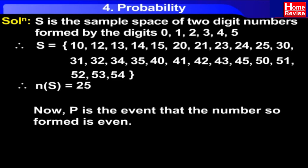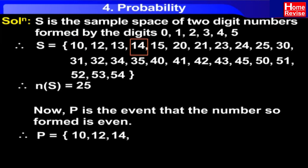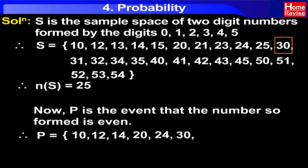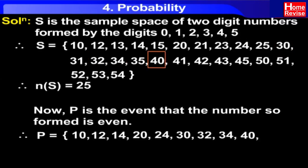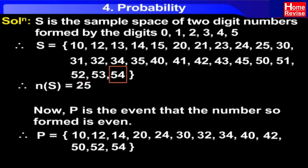Now P is the event that the number so formed is even. Therefore P is equal to { 10, 12, 14, 20, 24, 30, 32, 34, 40, 42, 50, 52, 54 }. Therefore N(P) is equal to 13.